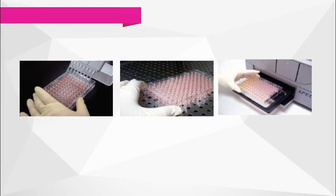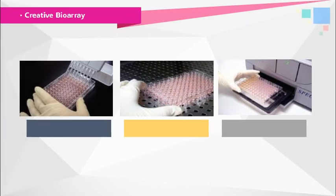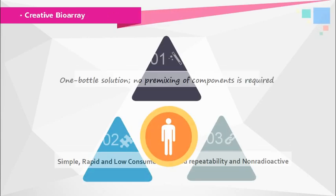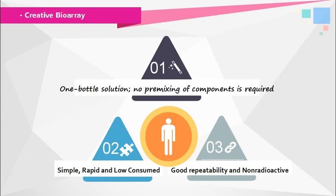The procedure of the CCK-8 assay is very easy — just three steps and it does not require much time for incubation. CCK-8 does not need mixing of components, and it is simple and rapid. In addition, it is non-radioactive, and this method allows sensitive colorimetric assays for the determination of the number of viable cells in cell proliferation and cytotoxicity assays.